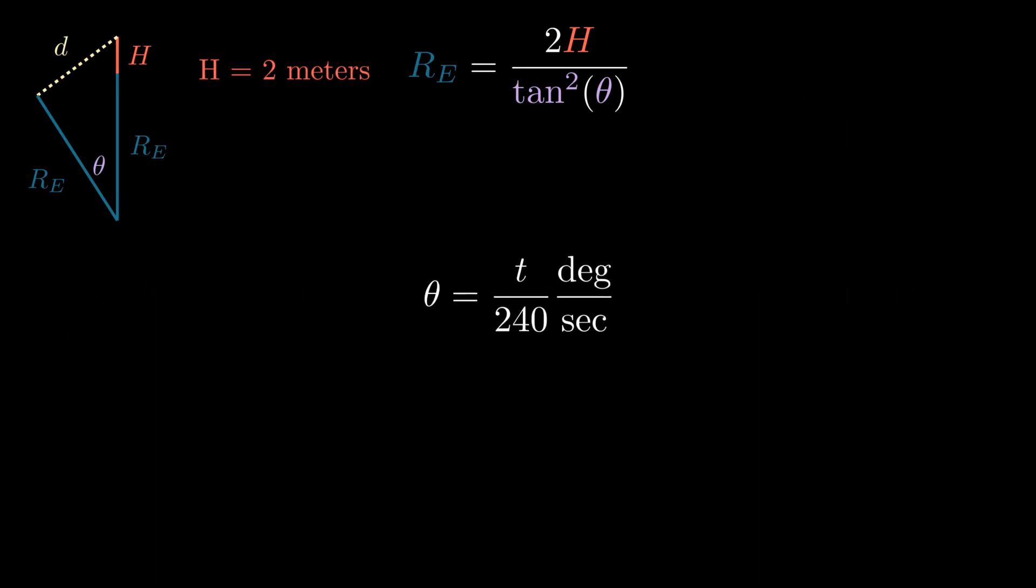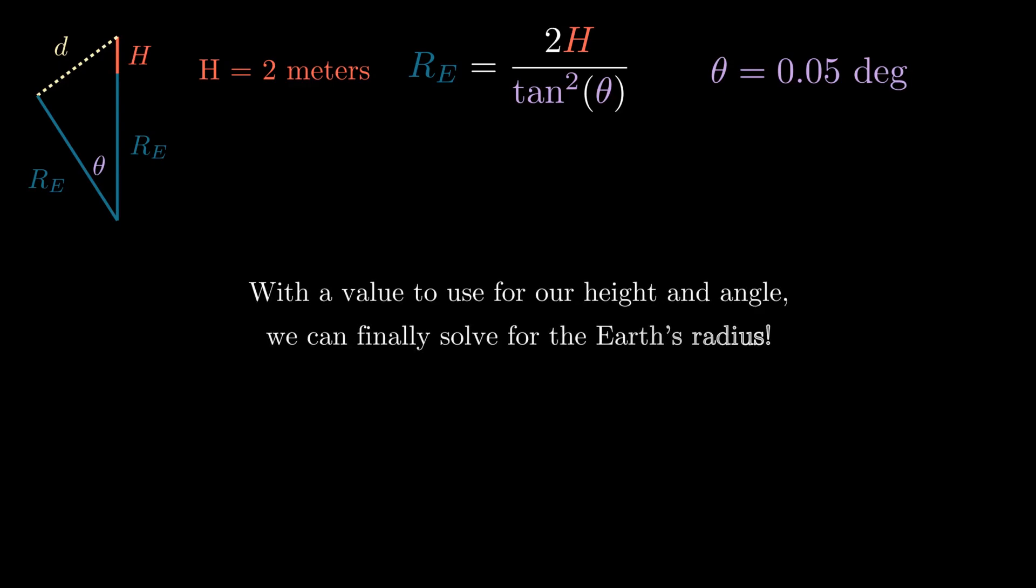Plugging that value for time from our stopwatch into the equation for our angle theta, we now have a value to use for both the height and the angle, so we can finally solve for the Earth's radius.